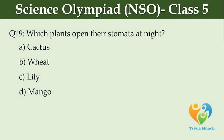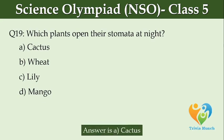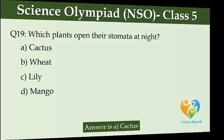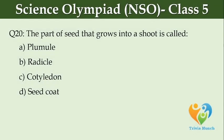Which plants open their stomata at night? Option A: cactus. Option B: wheat. Option C: lily. Option D: mango. The part of seed that grows into a shoot is called: Option A: plumule. Option B: radicle. Option C: cotyledon. Option D: seed coat.